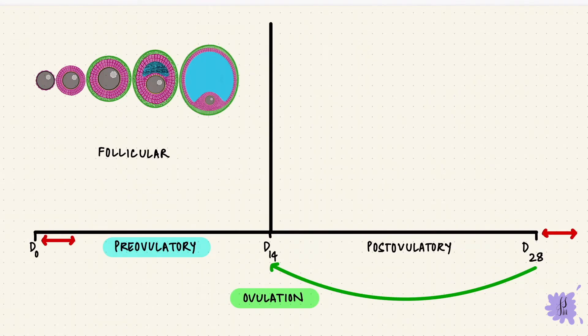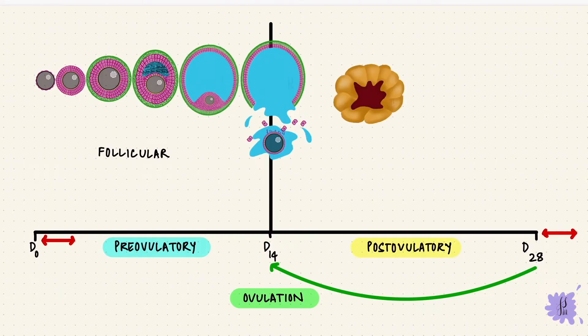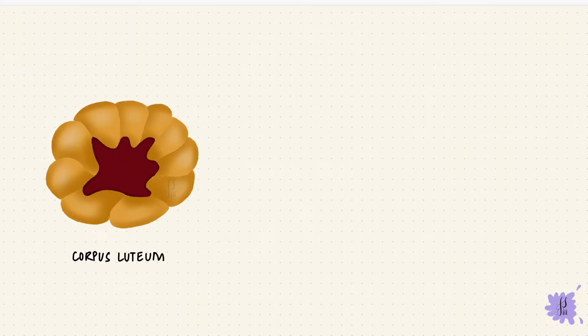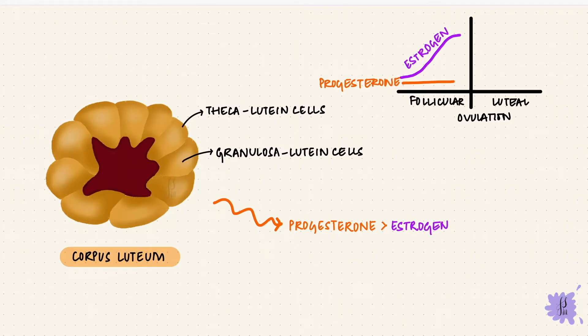At ovulation, the mature follicle ruptures and releases the oocyte. The remaining cells form the corpus luteum, with the granulosa luteum cells and the theca luteum cells. These cells have more lipid, and they synthesize more progesterone than estrogen. So in the luteal phase of the cycle, the progesterone levels are higher than estrogen.